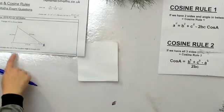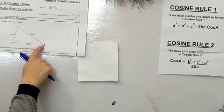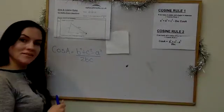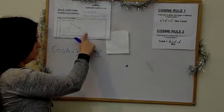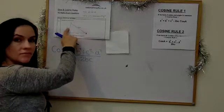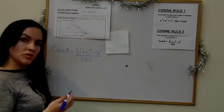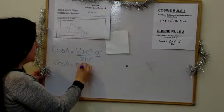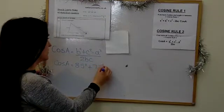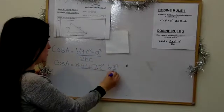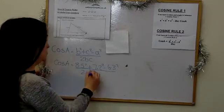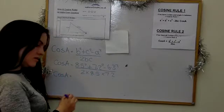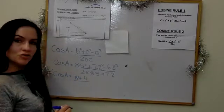The smallest angle is at the vertex opposite the shortest side, so we call that angle A. Using the cosine rule 2 formula: cos A = (b² + c² − a²) / (2bc) = (8.5² + 7.2² − 6.3²) / (2 × 8.5 × 7.2), which gives cos A = 84.4 / 122.4.